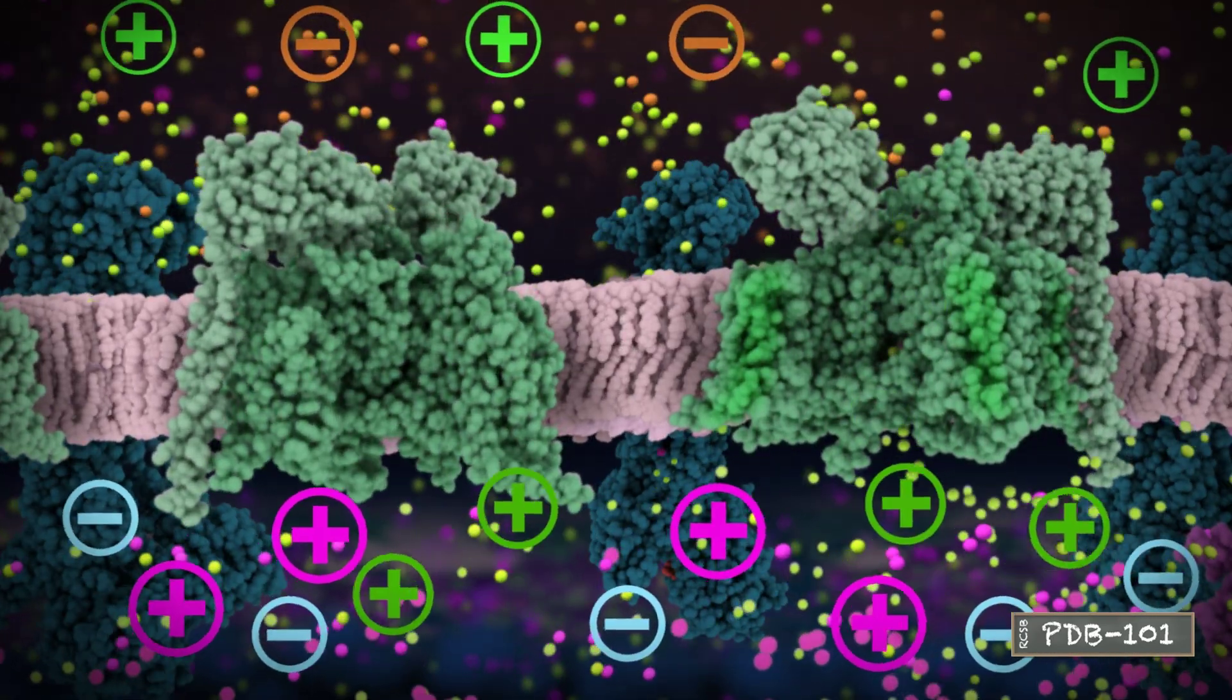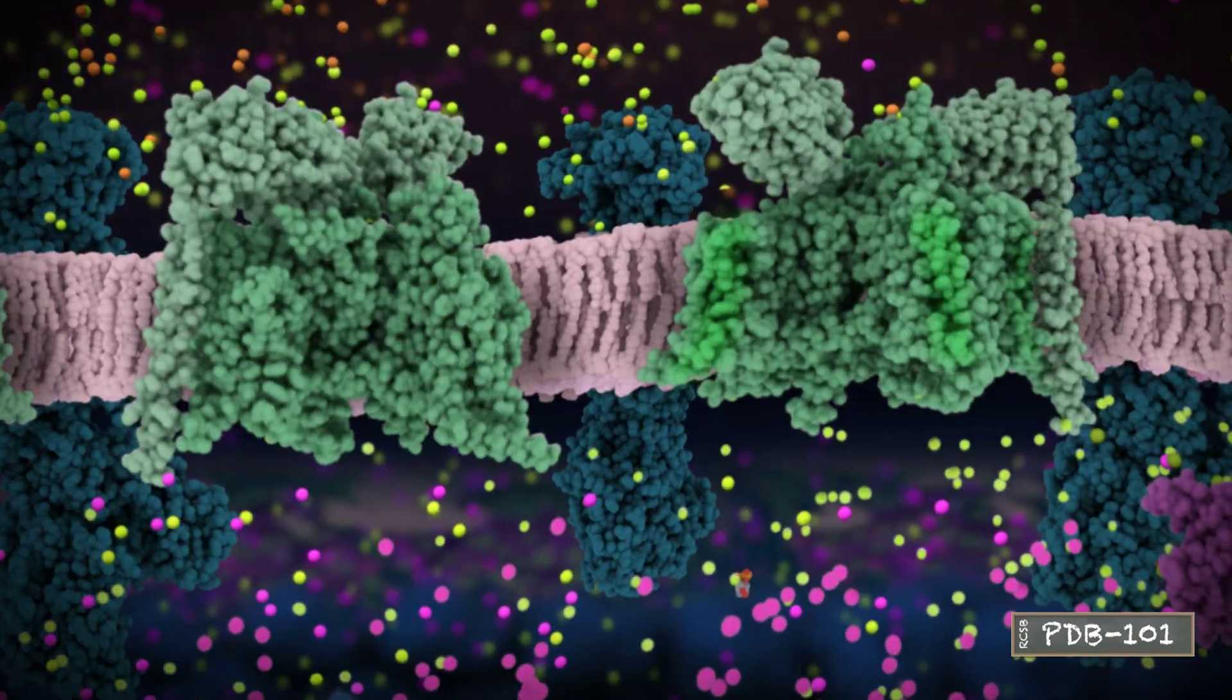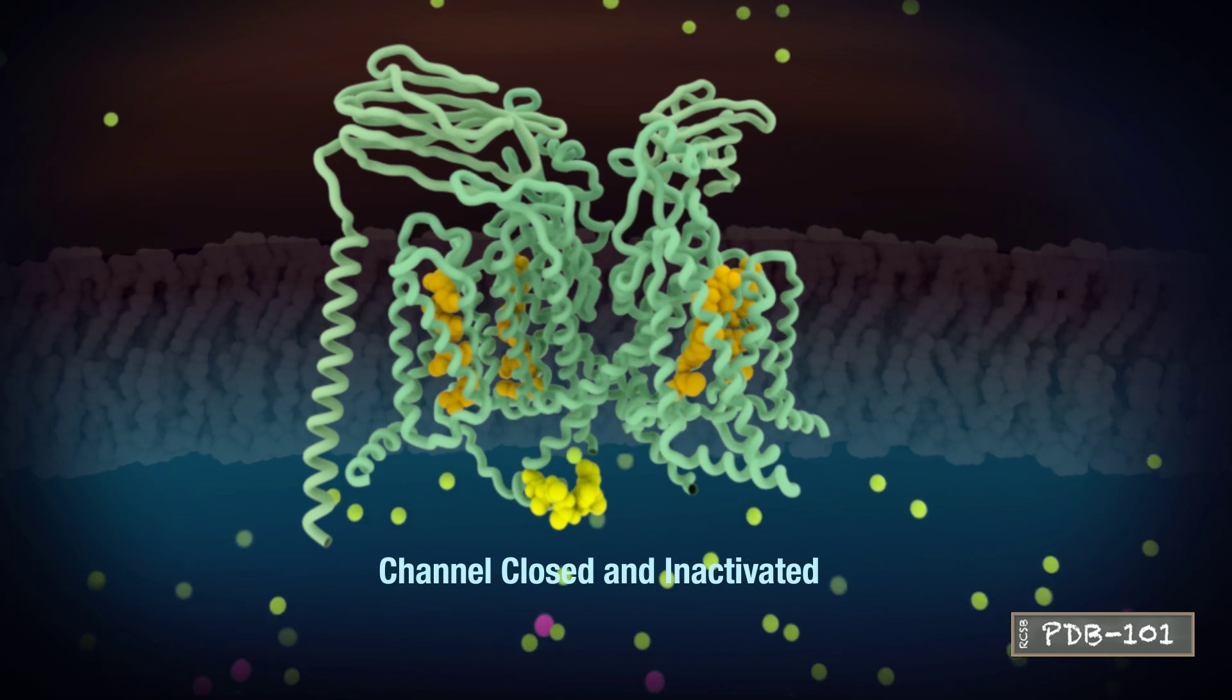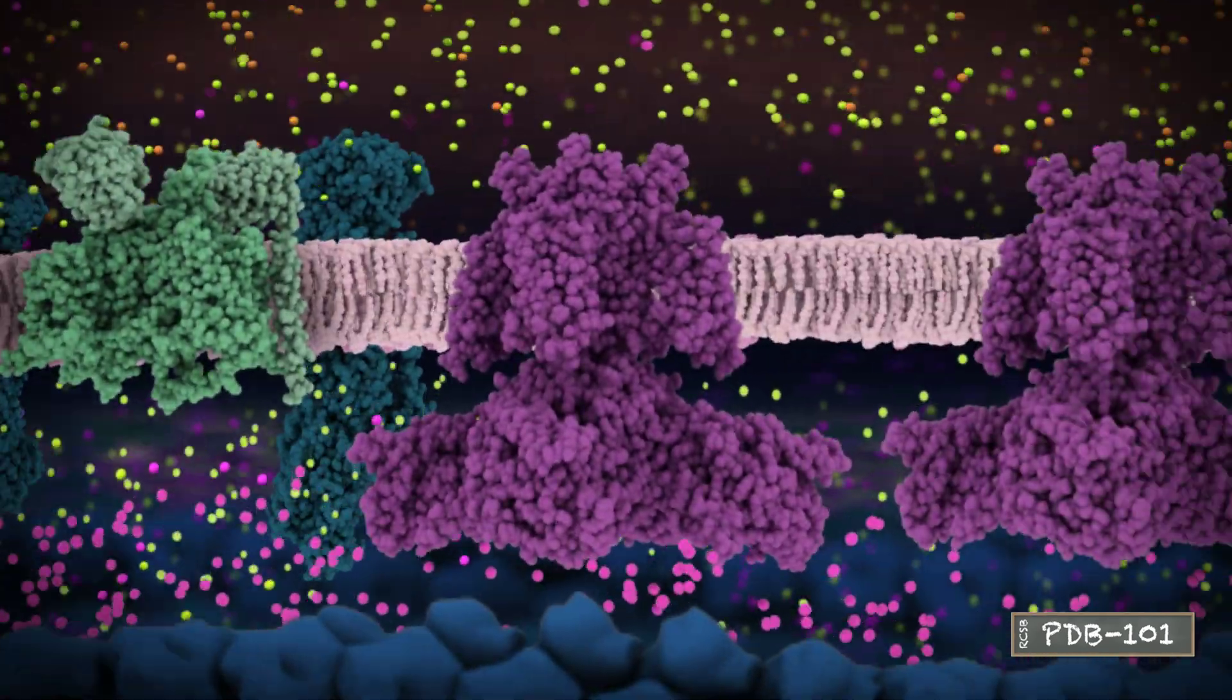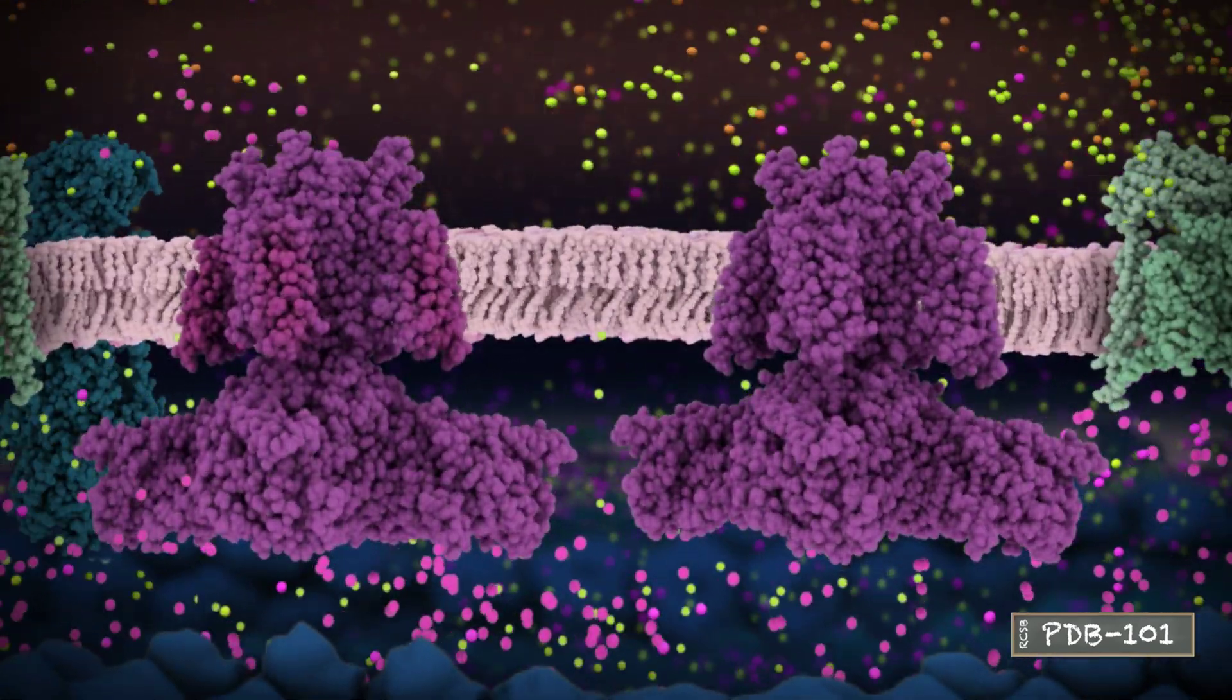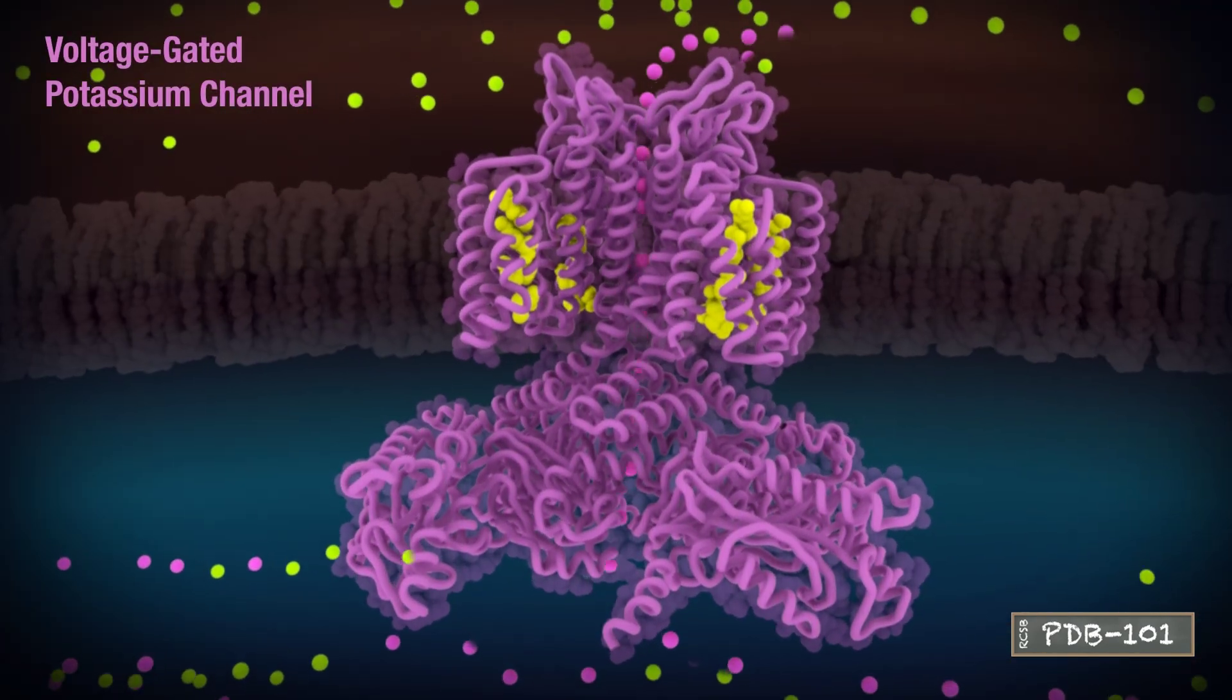Neurons then repolarize the membrane in several ways. First, voltage-gated sodium channels close and become inactivated. Then, to counteract the positive charge of the sodium ions, potassium channels open to allow potassium ions to exit, lowering the voltage across the membrane.